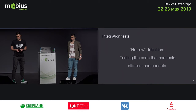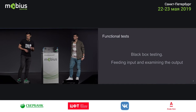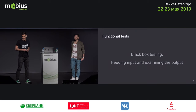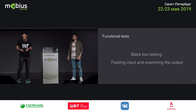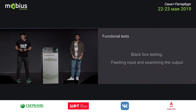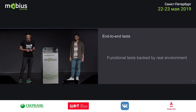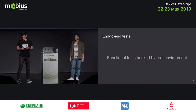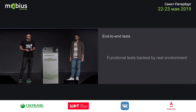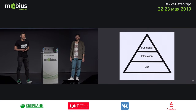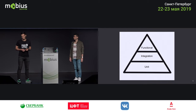The next level is integration tests. There are several definitions and we will stick to the so-called narrow one: integration tests test the actual connection between components without testing the component itself. Next is functional tests — a type of black box testing where you just feed input to the component and examine the output. The top level is end-to-end tests: functional tests against a real environment where your application speaks to a real backend and uses a real database.